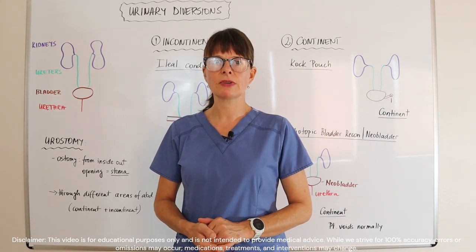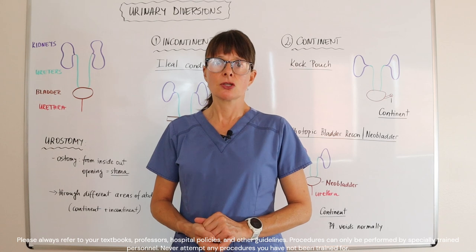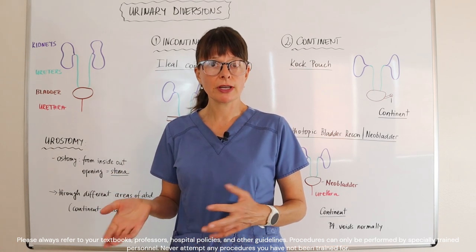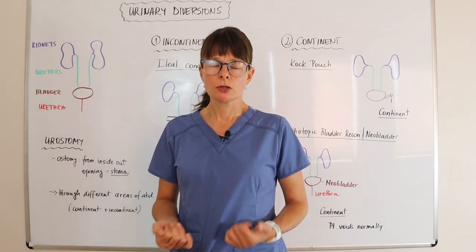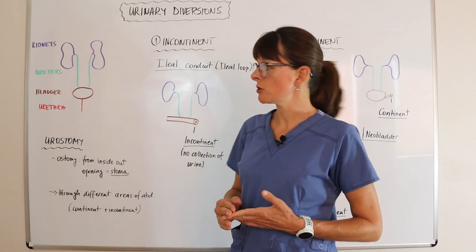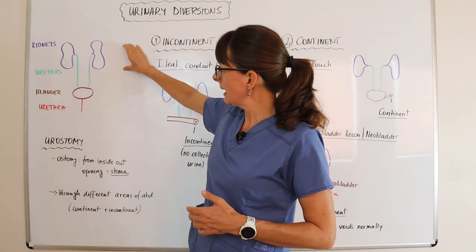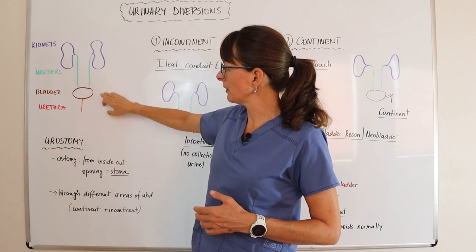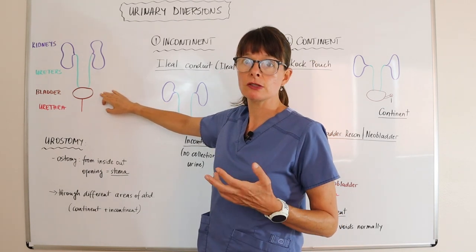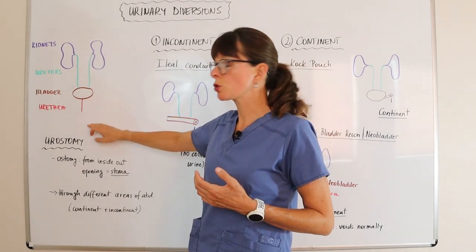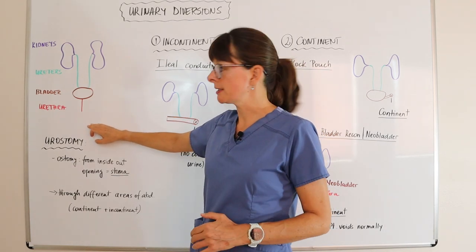Welcome to Nursing School Explained and this video on urinary diversions. Urinary diversions means that the urine is being diverted from the normal flow. To review this, let's look at the normal anatomy of the urinary tract. We have the kidneys and then the ureters that drain the urine from the kidneys into the bladder, the bladder serving as a reservoir for storage of the urine, and then the urethra which allows us to void or eliminate the urine.